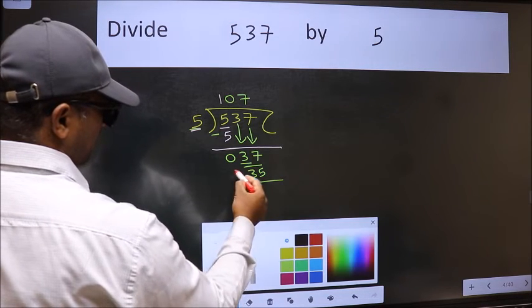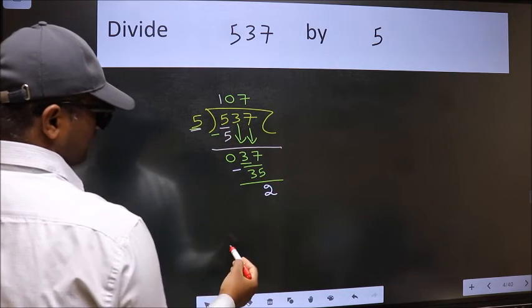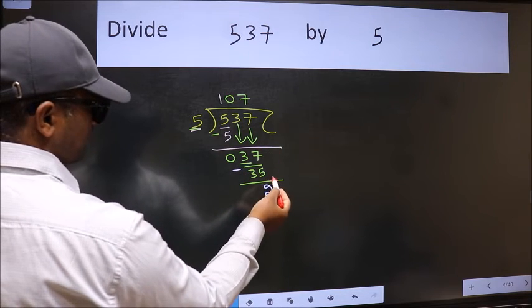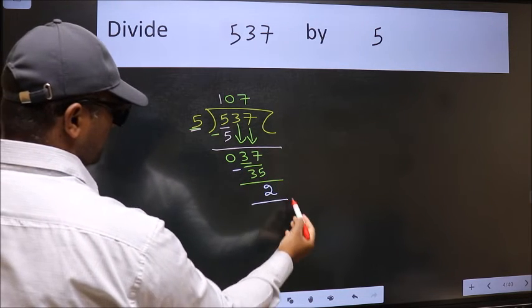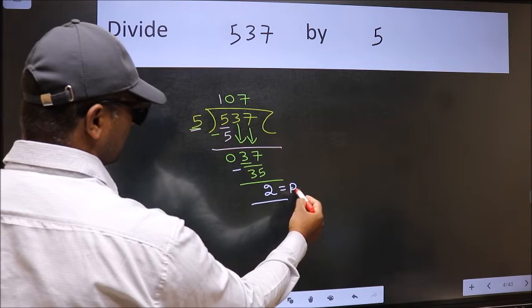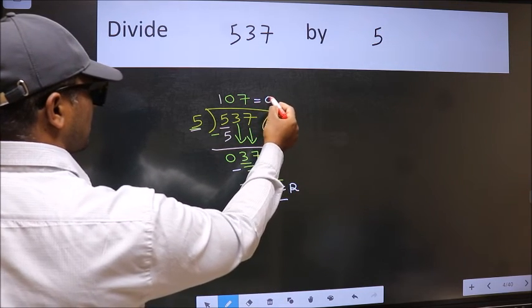Now we should subtract. We get 2. No more numbers to bring it down, so we stop here. This is our remainder and this is our quotient.